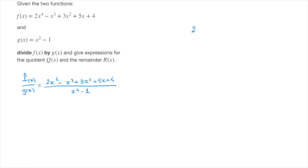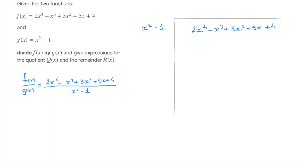I write 2x to the power of 4, minus x cubed, plus 3x squared, plus 5x, plus 4, and add a table around it. On the left-hand side I write x squared minus 1, the polynomial by which we're dividing. The first step is to look at the leading term of g of x, which is x squared, and find what we multiply it by to reach the leading term of f of x, which is 2x to the power of 4. We need to multiply x squared by 2x squared, so I write 2x squared at the top of the table.